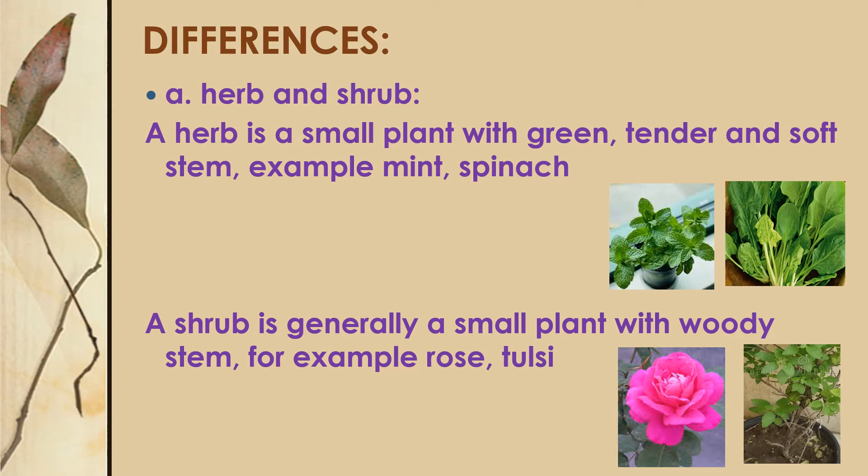Let us take up a few differences between a herb and a shrub. A herb is a small plant with a green, tender, and soft stem — for example, mint and spinach. A shrub is generally a small plant with a woody stem — for example, rose and tulsi.